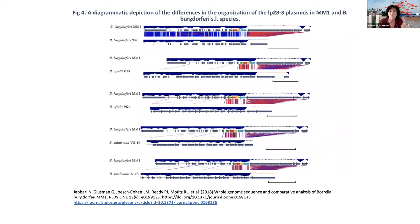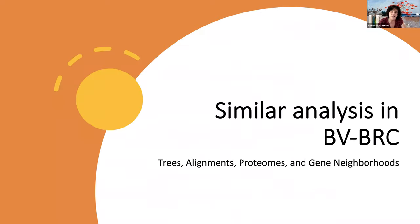They did a deep dive into specific plasmids — this was plasmid LP28-8 — and you can see they combine their strain, the MM1 strain, with other LP28-8 genomes from different organisms. What they're trying to look at is genes that are shared and genes that are unique. I wanted to see if we could do something similar in BVBRC, so let me get out of the slides.